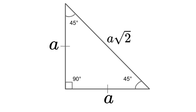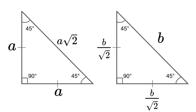We can also rewrite it in a different way: if the hypotenuse is B, then each other side would be B divided by the square root of 2.